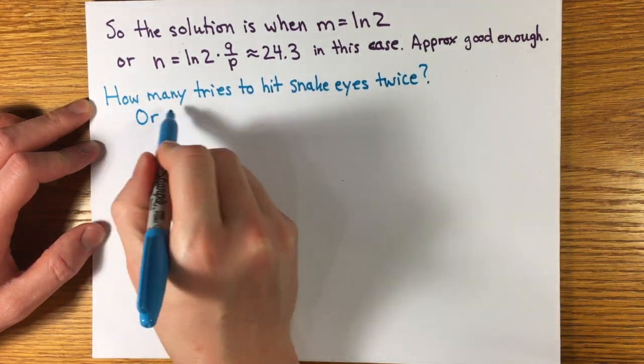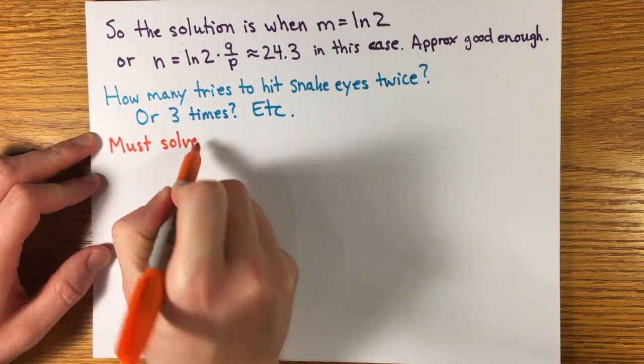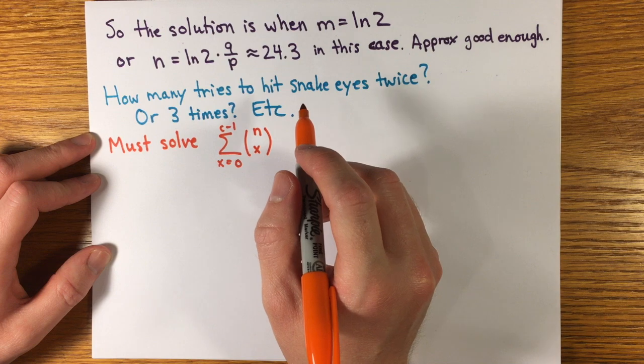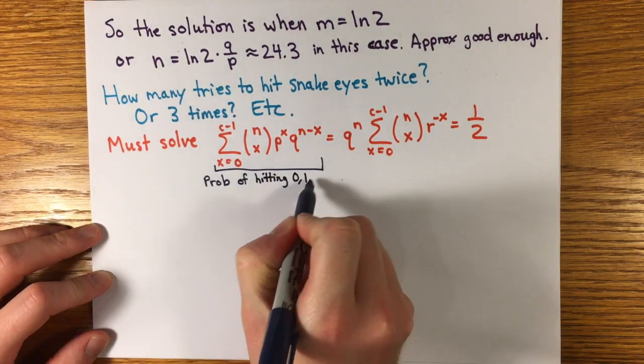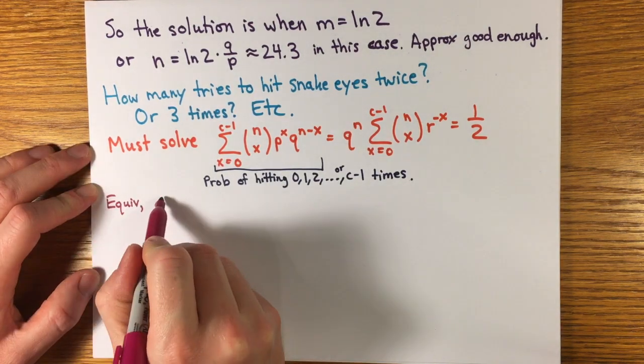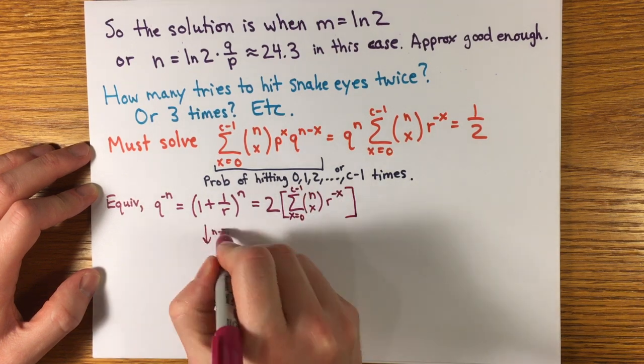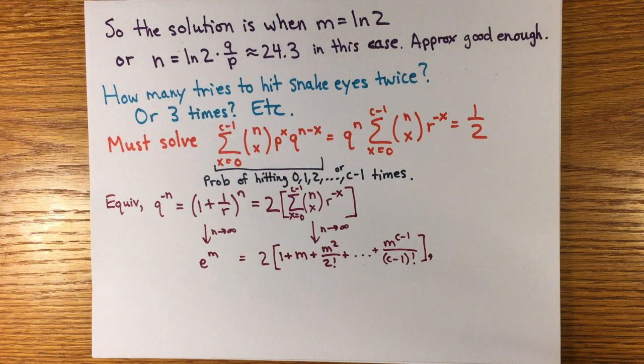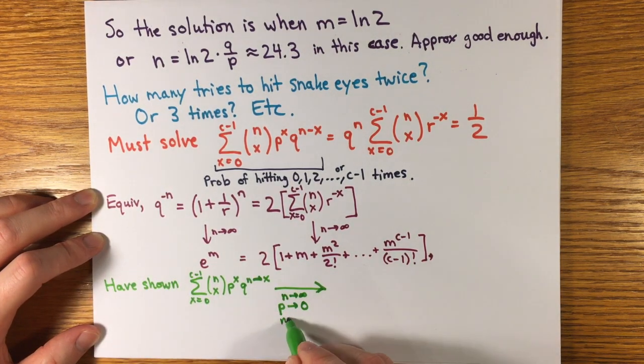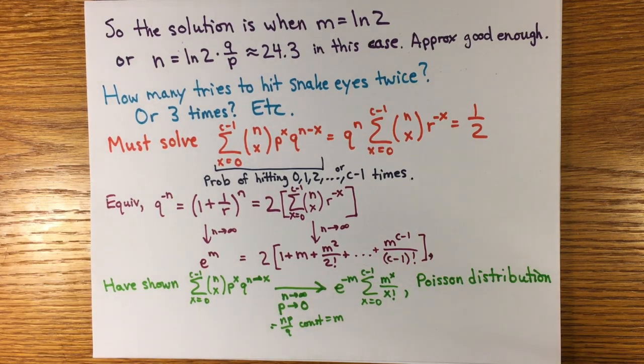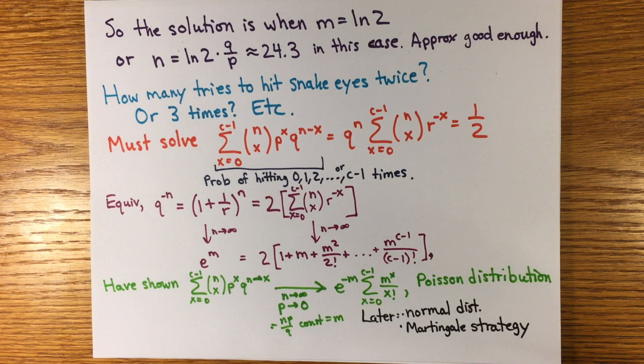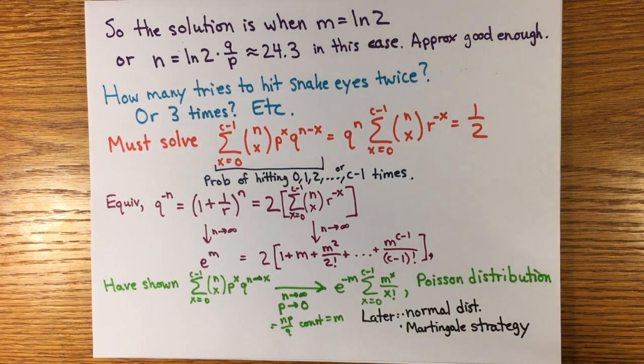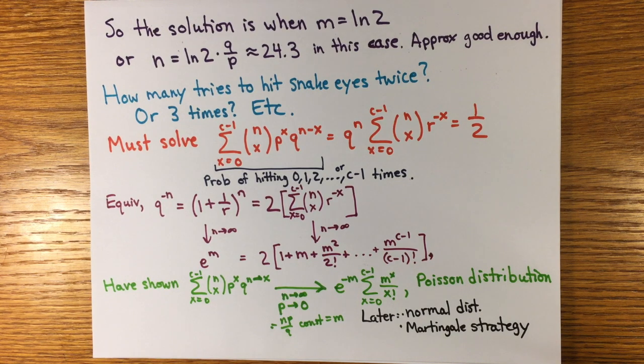What about how many tries before it's a fair bet to throw snake eyes twice or three times for c successes? You can set the failure probability that of getting 0, 1, 2, or up to c minus 1 successes to 1 half. Again, you can take limits to get a transcendental equation for m involving the exponential function and the truncation of its power series. This was also done by Dumois in the same work, essentially finding that the limit of the binomial distribution, when the success rate goes to 0 but the tries increase so that np over q is constant, is what we call the Poisson distribution. This result is named for Poisson, who would not even be born for another 70 years. That's the first appearance of exponentials in probability.